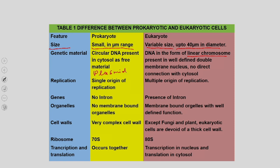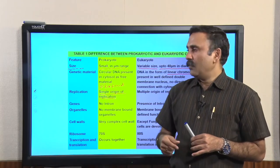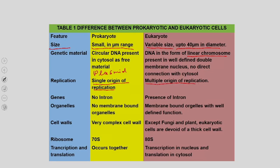As far as replication is concerned, prokaryotes replicate with a single origin of replication, meaning the chromosomal DNA has one origin of replication to synthesize the whole genome. In eukaryotes, there are multiple origins of replication, allowing replication to be completed much faster. Prokaryotic genes do not contain introns — the non-coding regions present in the genome — whereas these regions are present in the genes of eukaryotic systems.